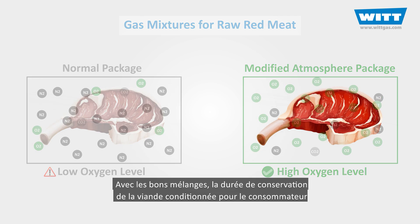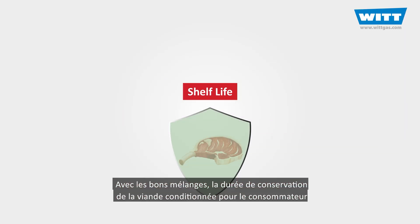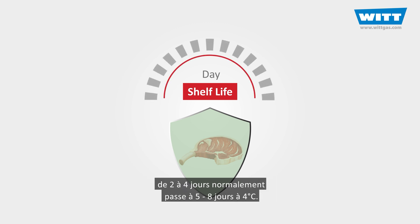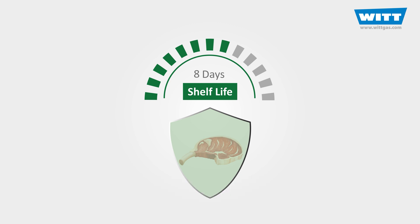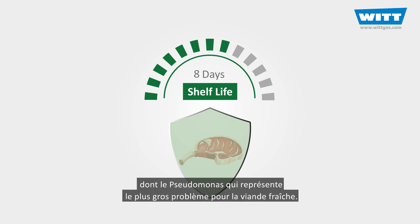With the right mixtures, the practical shelf life of consumer packed meat can be extended from 2 to 4 days to 5 to 8 days at 4 degrees Celsius. Also, carbon dioxide has a strong inhibiting effect on the growth of bacteria, of which Pseudomonas presents the greatest problem for fresh meat.